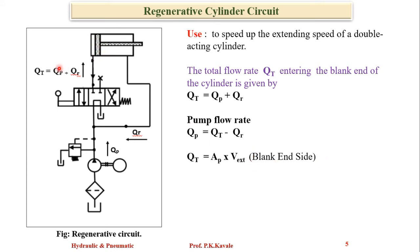...Ap times extension velocity Vext for the blank side. The same liquid coming through the rod side has flow Qr, which equals the effective area (Ap minus Ar) multiplied by the extension velocity Vext.